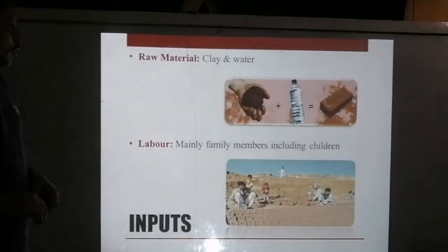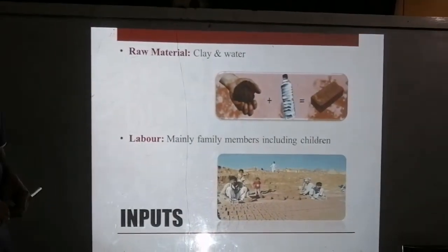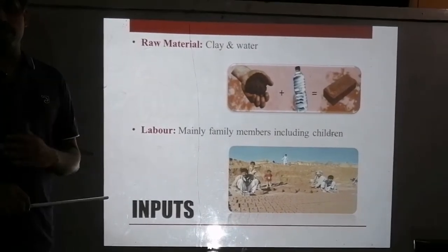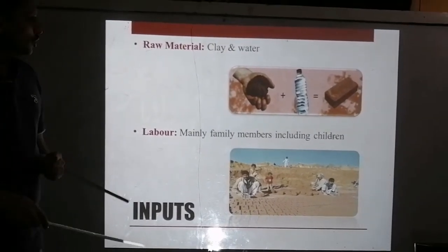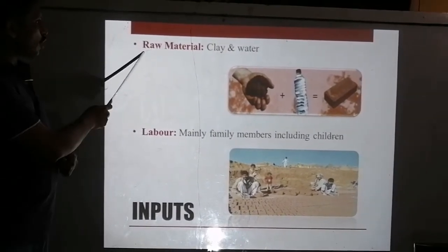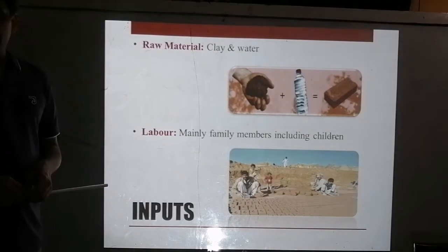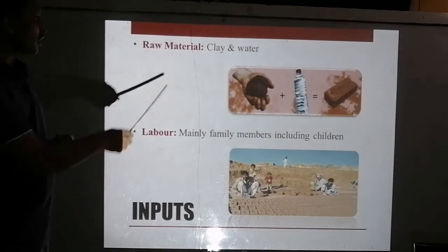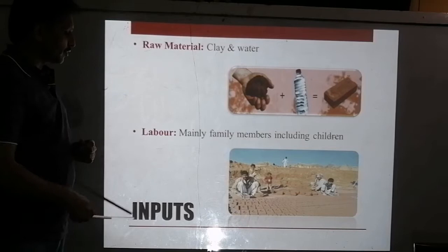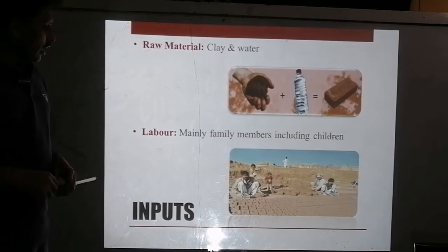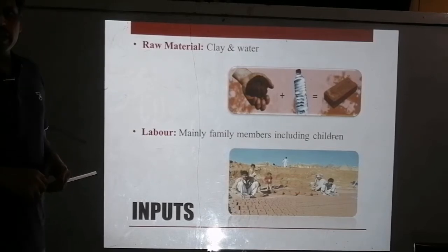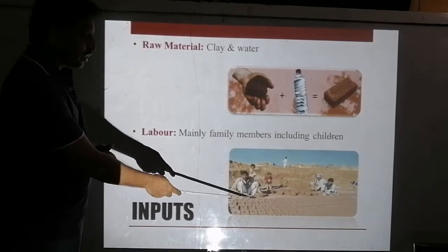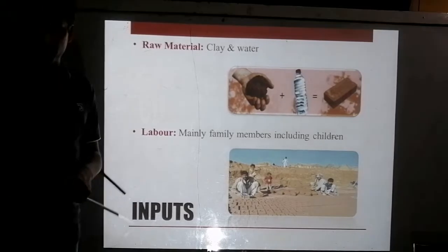Inputs include raw material, labor, power, and capital. The raw material is natural and locally available, and includes clay and water. Labor mainly consists of family members, including children, as can be seen in the photograph.